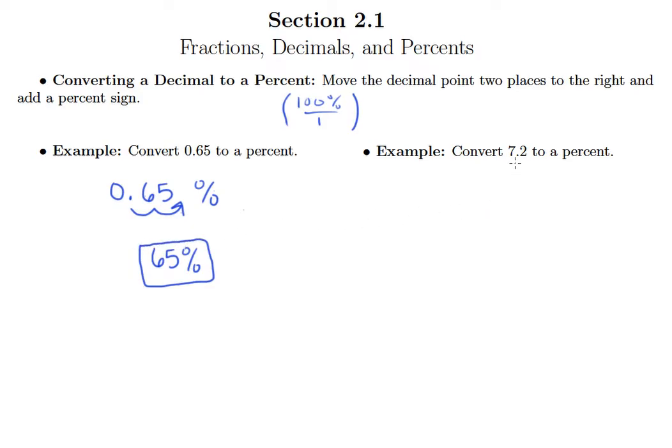If I take something like 7.2, again it's a decimal number. I'm going to move the decimal point two places to the right and add a percent. Remember, if you jump over an empty space in a number, you're adding a zero. So 7.2 is 720%. Feel free to use this shortcut whenever you have a decimal number that you want to convert to a percent.